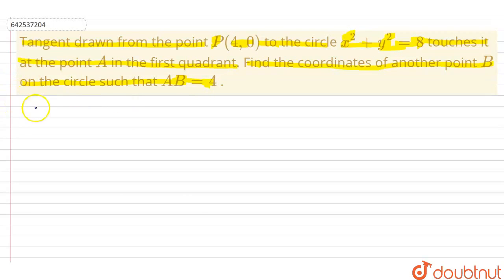So, here, let us assume the point A to be (h, k). Now, since the tangent at A passes through (4, 0),